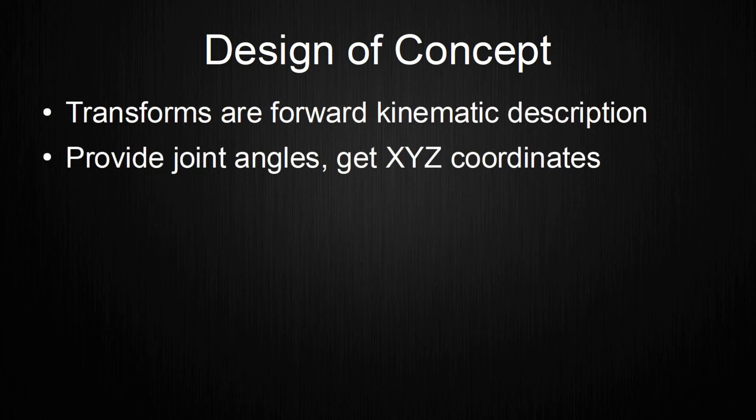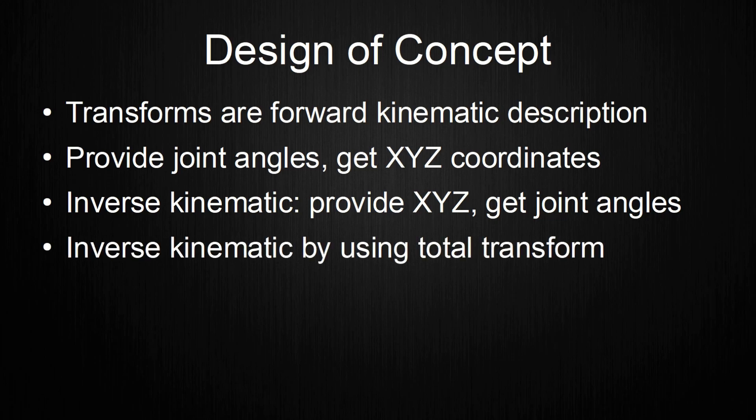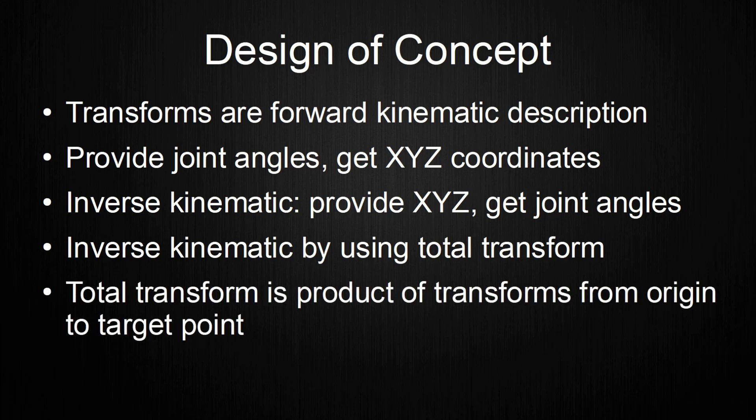This means that you provide joint angles and the transform will give you the x, y, z coordinates. The inverse kinematic is the other way around. You provide the x, y, z coordinates and the inverse kinematic model determines the required joint angles. To do this, a transform from the origin to the place that we want to control needs to be created. Luckily, this is easy by multiplying all transforms that are on the way from the origin to the controlled point with each other. The result is again a 4x4 matrix, but it describes the position and rotation of the controlled point in the origin coordinate system.